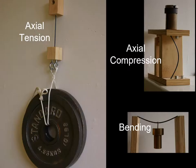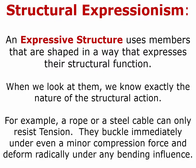So those are the four types of structural action: axial tension, axial compression, bending, and torsion. Now, one of the things many of us are interested in is structural expressionism — where instead of burying the structure or making it disappear, we want to make it expressive. We say an expressive structure uses members shaped in a way that expresses their structural function; when we look at them, we know exactly the nature of their structural action.